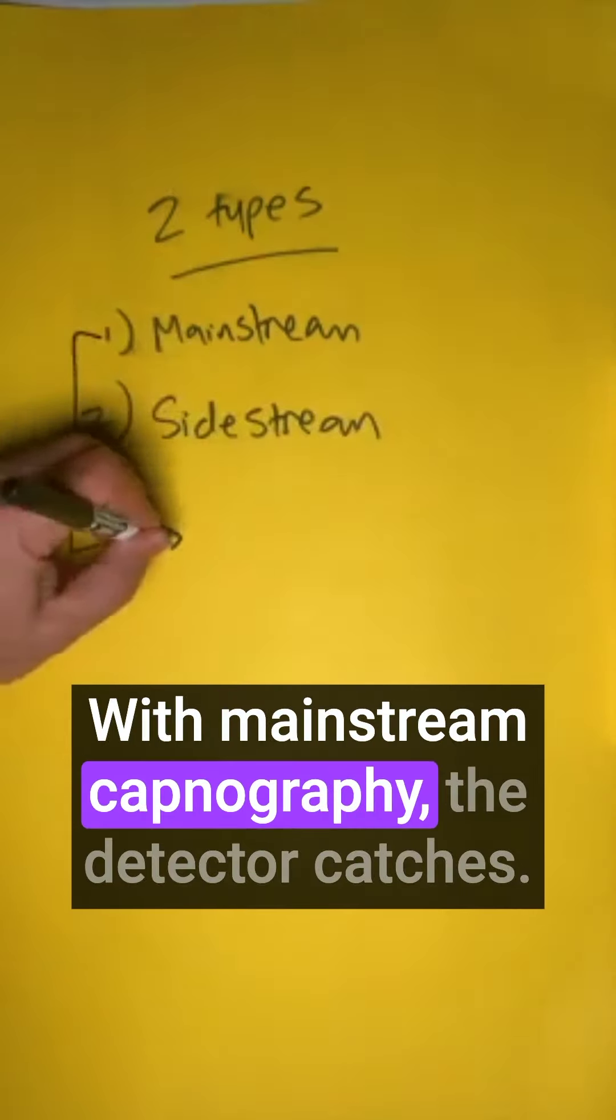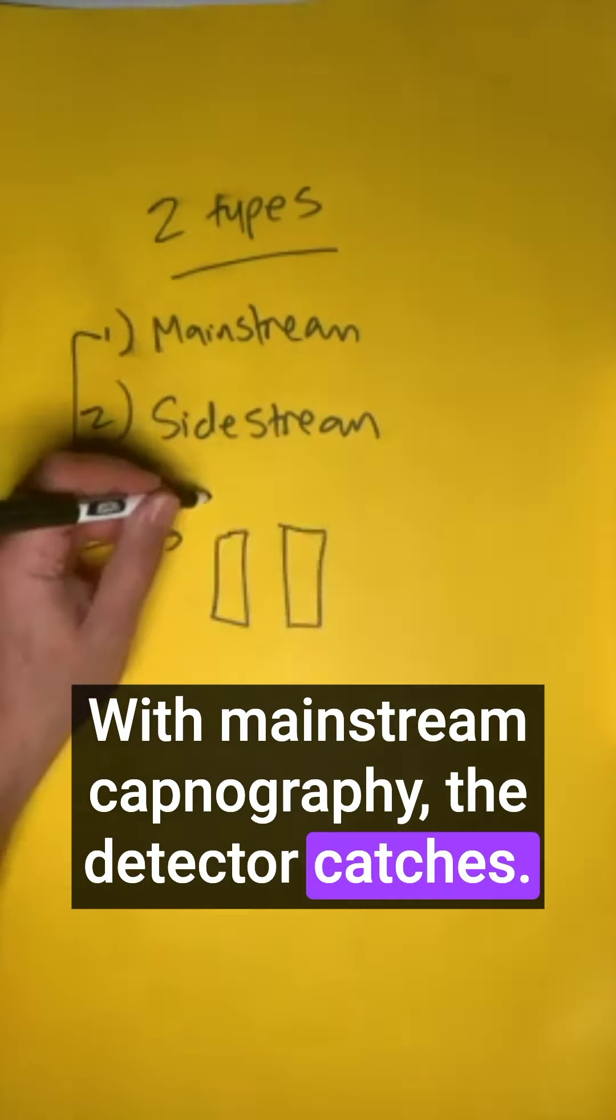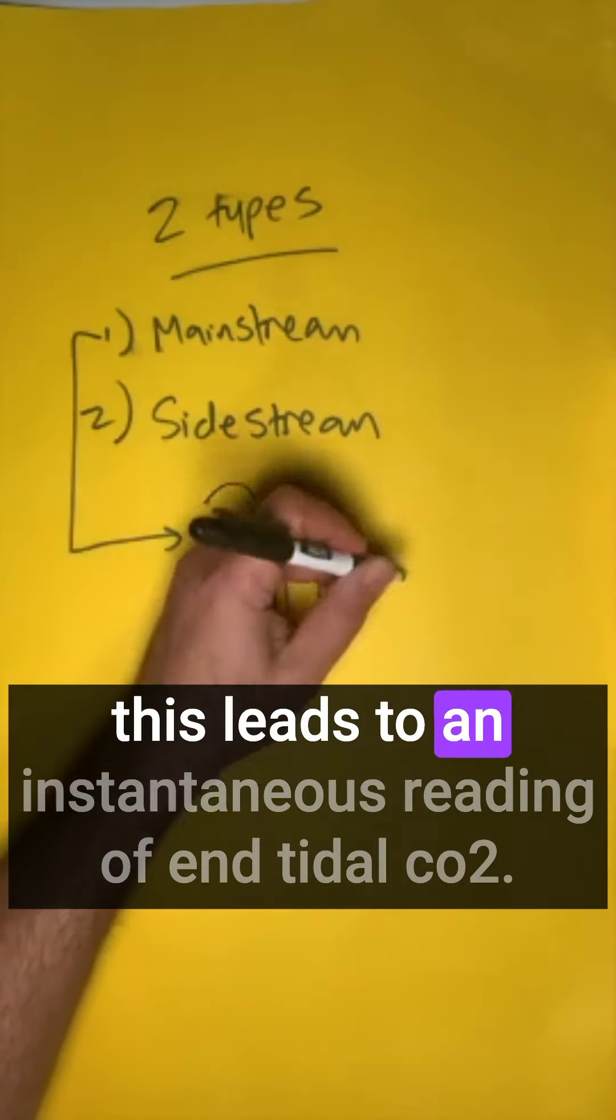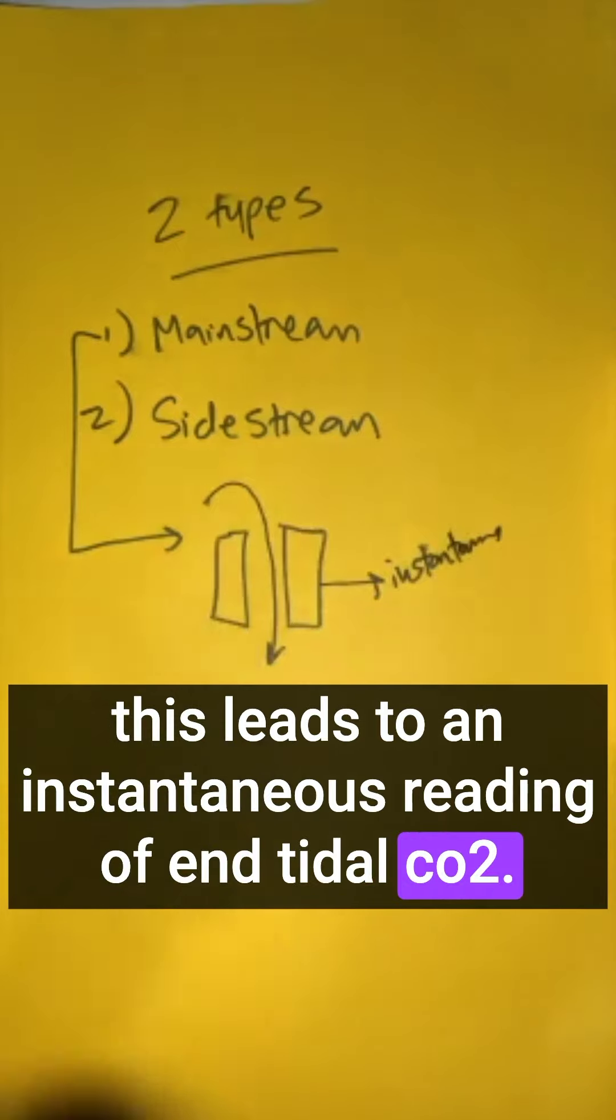With mainstream capnography, the detector catches air as it goes through between the detectors. This leads to an instantaneous reading of end-tidal CO2.